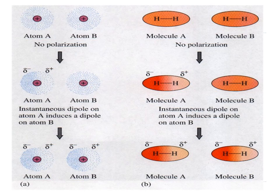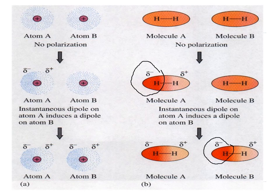Here is another example using molecules A and B of hydrogen gas. On the left side, molecule A has a negatively charged electronegative part and an electropositive part on the right. The neighbouring molecule B then becomes negative on the side adjacent to the positive part of molecule A, demonstrating induced dipole attraction.